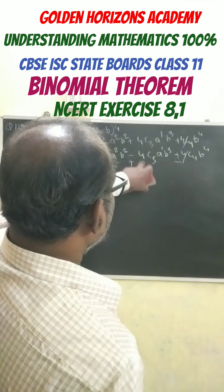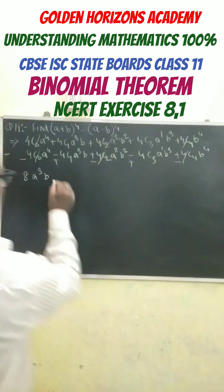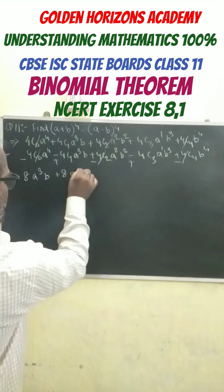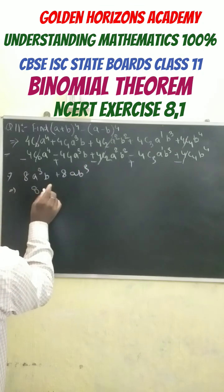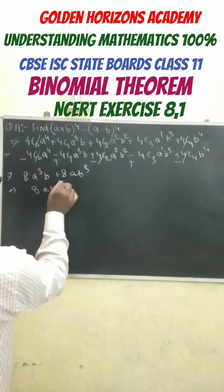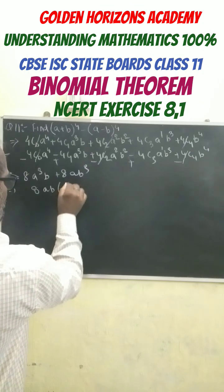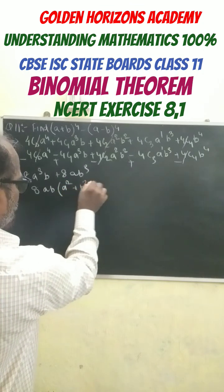Plus 8ab^3. So this is our final answer, we get 8ab, here we get a^2 plus b^2.